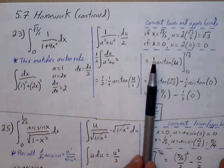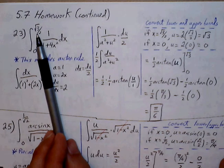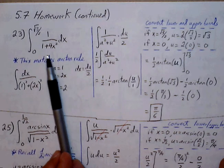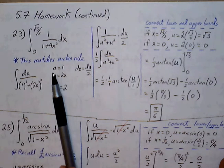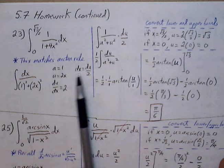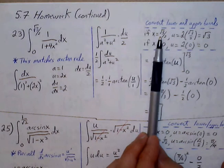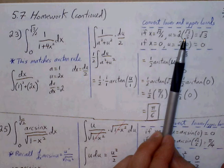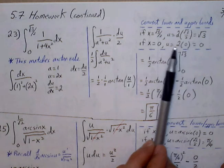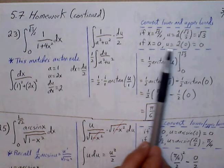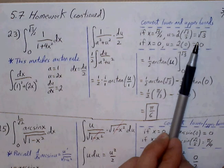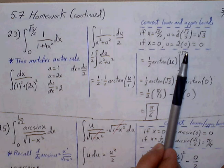I'm going to convert the upper and lower bounds to be in terms of u, because right now they are in terms of x. The conversion we use is u = 2x. If I plug in √3/2 for x, I get 2 times √3/2 — the 2 cancels — and we get √3. If I plug in 0 for x, I get 2 times 0, which is 0. So our new upper bound is √3 and our new lower bound is 0.